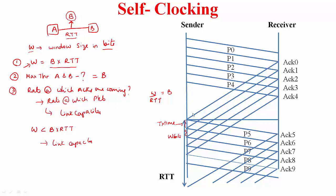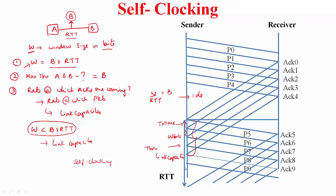If W is less than the bandwidth-delay product, the full link capacity is not utilized — some time is idle. But when ACKs arrive and new packets are sent, the throughput the sender achieves equals the link capacity. ACKs have this nice property called self-clocking: by sending data in response to ACKs, you achieve the throughput entitled to you. W matters in that you don't want to stay idle; you still want to send packets.